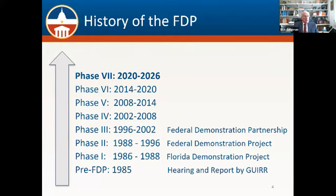That project proved so successful that in 1988 it morphed into what was then the Federal Demonstration Project, launched in Orlando, Florida in 1988. We had a pause during that meeting so that we could all go to the windows and watch the launch of a spacecraft. That was a very exciting meeting, and I will freely admit that I was there, not quite as gray as I am today.